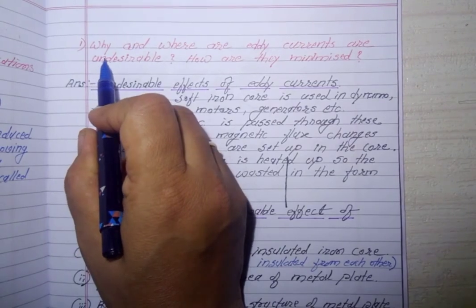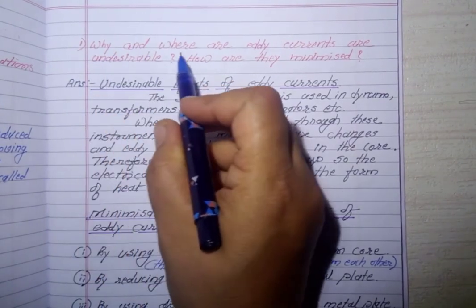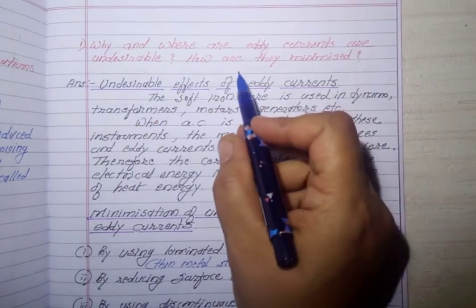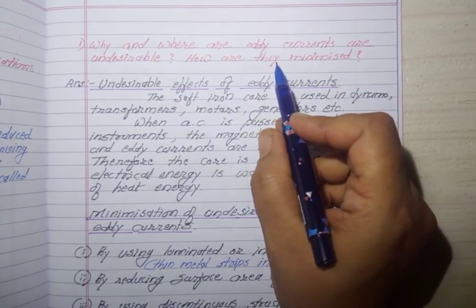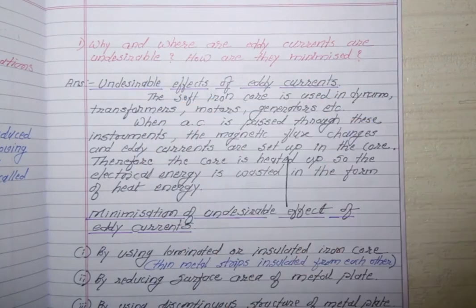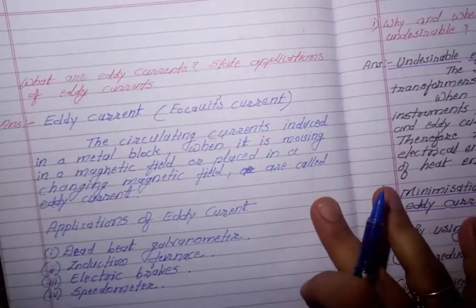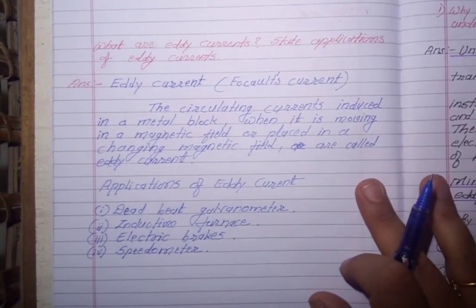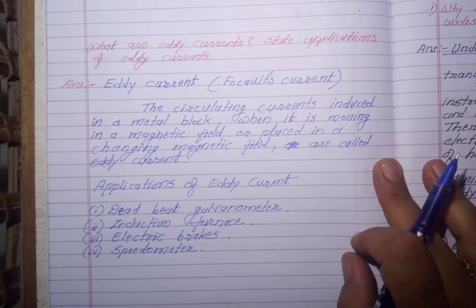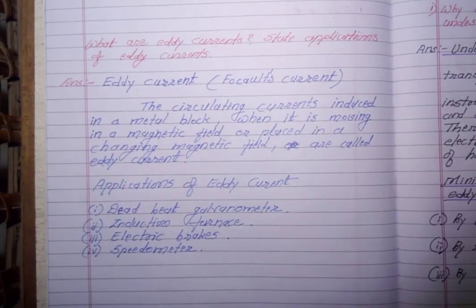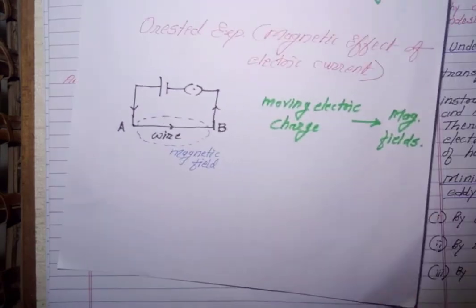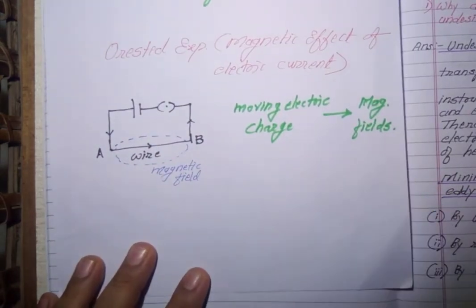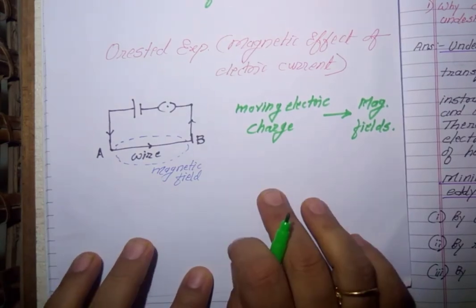The first question in the question bank for 2 marks is: why and where are eddy currents undesirable, and how are they minimized? To answer this, I want to explain what eddy currents are. There is also a question in your exercise: what are eddy currents and state their applications.